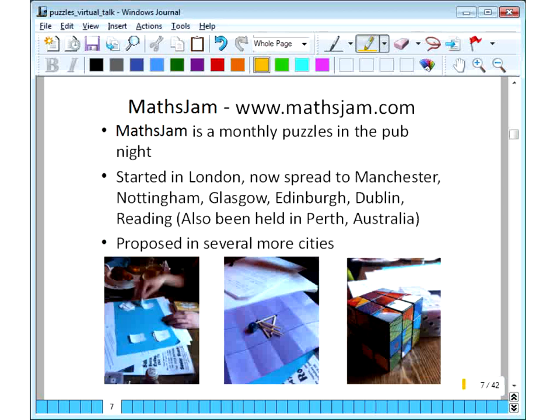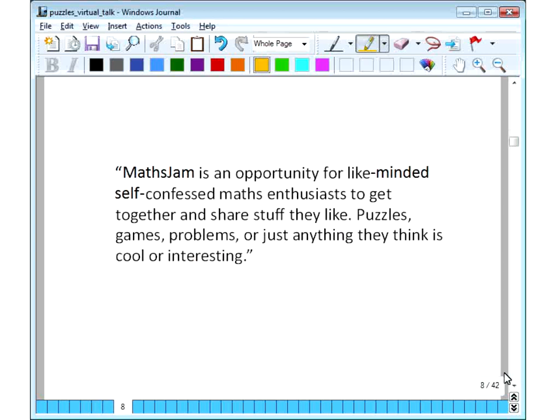So small group puzzles. My experience here is with a thing called MathsJam. MathsJam is a monthly puzzle in the pub night. It was started in London by a chap called Matt Parker, and it's now spread to Manchester, Nottingham, Glasgow, Edinburgh, Dublin, and Reading. There was one in Perth in June, although that doesn't seem to have been repeated in July. Anyway, and it's proposed in several more cities. So if you go to the web address, you can find your nearest one. And you can find where else has been proposed. And if you live there, you can say, oh, I'd come along if you'd set one up here. But they're just organized by local people. I organized the Nottingham one, for example.